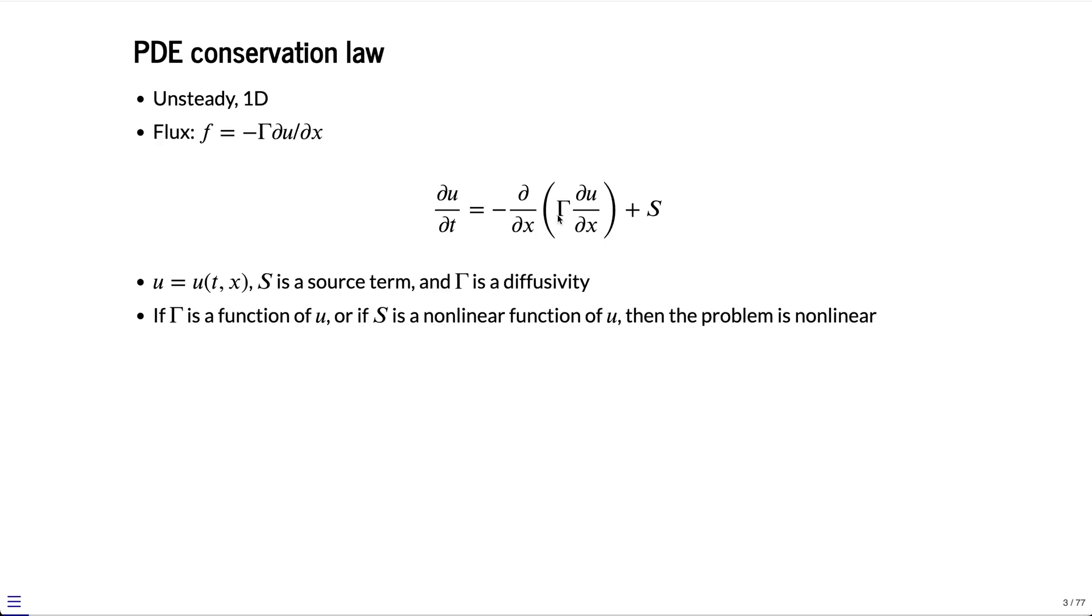If the diffusivity is a function of the scalar U, then we have a nonlinear problem. Or if the source term is a nonlinear function of U, then it's nonlinear. One of the benefits of pseudospectral methods is that they can treat nonlinearity really simply without having to do anything special.